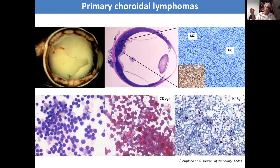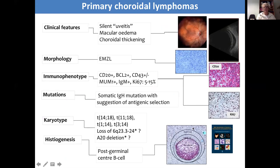If you get a tiny intraocular biopsy, you'll see that these cells are the same size as red blood cells — they're small B-cell lymphomas. They stain with CD20 but also with CD79A, and they have a very low proliferation rate. This is a low-grade B-cell lymphoma, distinctly different from the vitreoretinal lymphomas, which are highly aggressive. The primary choroidal lymphomas do not have an association with the CNS and are more often than not recognized and treated with low-dose radiotherapy.